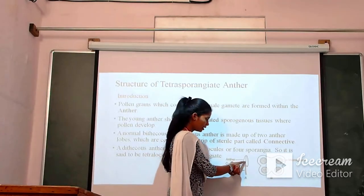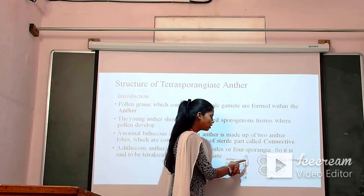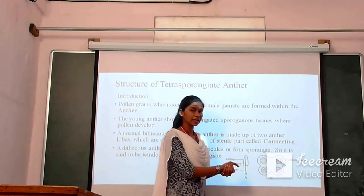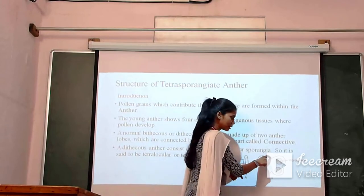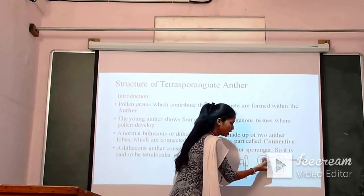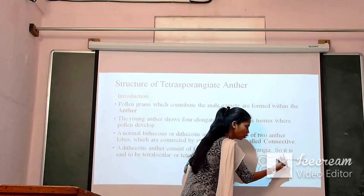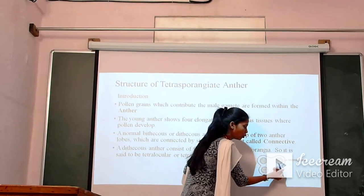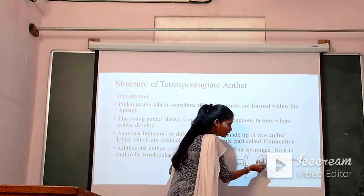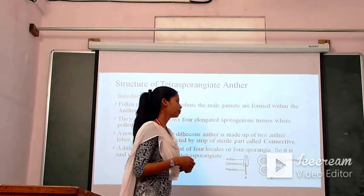This is the structure of the stamen — there are two lobes and this is the filament. These two lobes are joined together by a sterile strip of cells known as the connective. When you take a transverse section of this anther you will see: this is one lobe and this is another lobe. Inside a single lobe, two sporangia or two pollen sacs are present. So in total, four pollen sacs are present in a dithecous anther, and inside each pollen sac a sporogenous tissue is present. That sporogenous tissue will give rise to pollen grains at maturity.